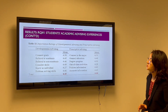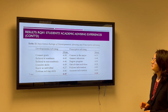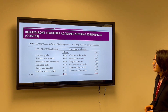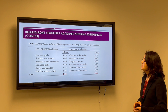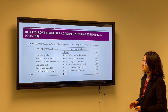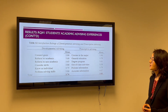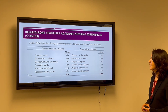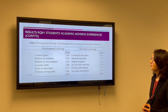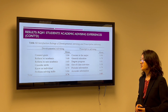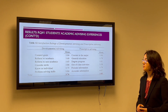Here is a mean score comparison of the 12 academic advising functions, put into two categories: developmental advising and prescriptive advising. We can see that the mean scores are almost the same, meaning students attach the same importance to both styles. However, from the satisfaction ratings, students have a higher mean score for prescriptive advising than developmental advising, although developmental advising is most advocated by professionals.